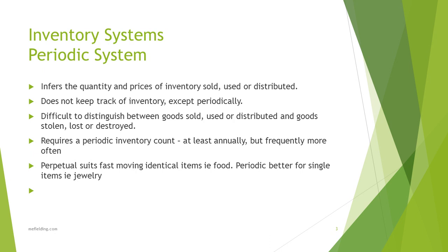To summarize inventory systems: perpetual systems — think supermarkets with the entire purchasing chain linked through the computer — suit high-volume, high-risk goods. Periodic systems suit items that don't require continuous monitoring: high-risk items like cash or jewelry may be counted twice daily, medium-risk items weekly, and low-value items perhaps annually. Even perpetual systems usually include some periodic checking to ensure the computer records match what's actually in the warehouse.